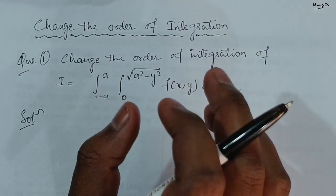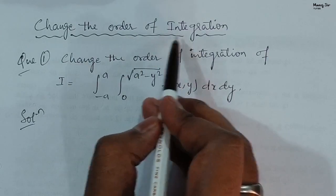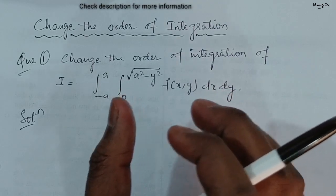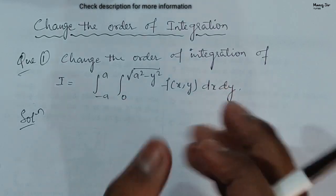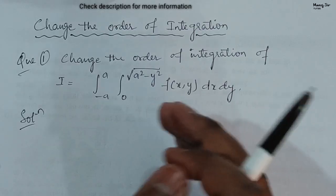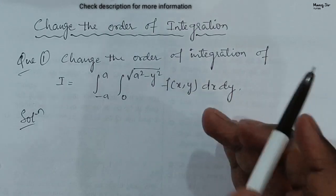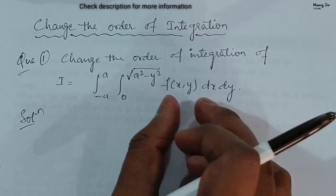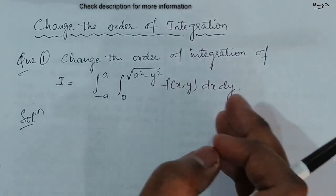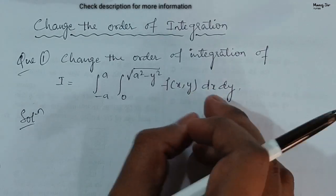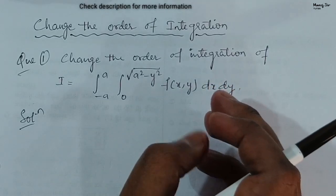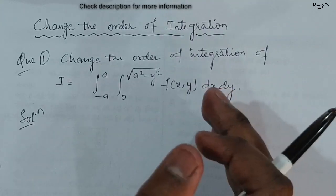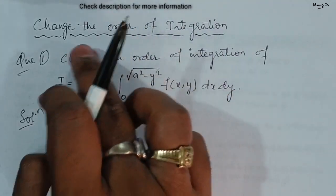Before starting, we must understand why we are discussing the order of integration and why we change it. Sometimes the integration becomes very difficult to solve as per the given order. So to make it easier, we change the order of integration. Suppose we have an expression in terms of x and y and we are integrating first with respect to x, but sometimes it's very difficult. So we change the order to make the integration easier.